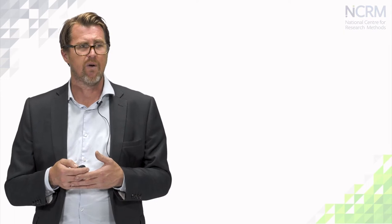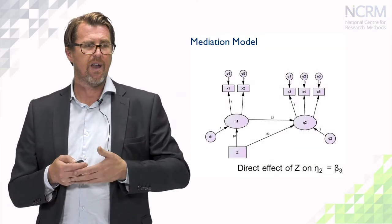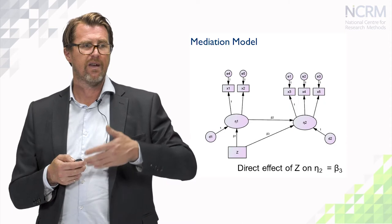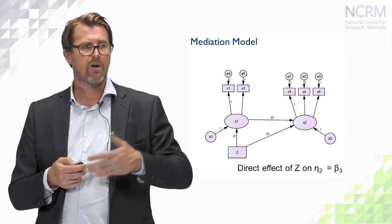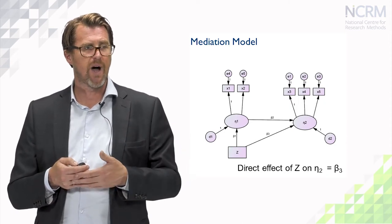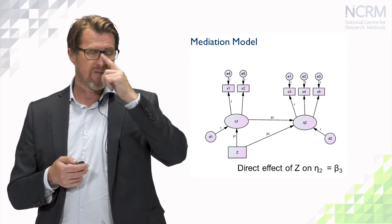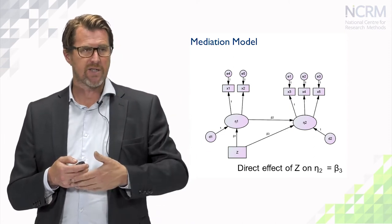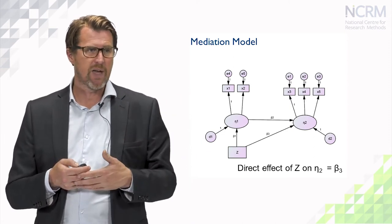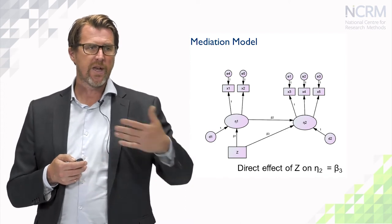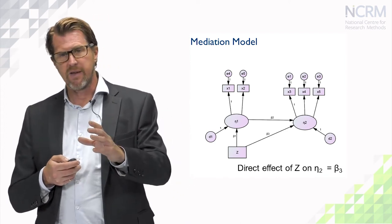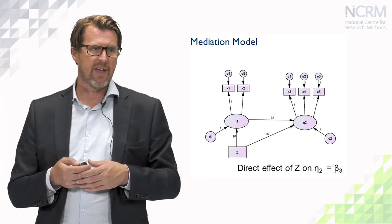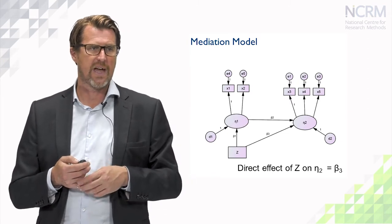We've seen a couple of examples of path diagrams with mediation already. Here we see an example where we have eta2, a latent variable, which is regressed on eta1, and we have a third variable z, which is our exogenous variable here. And we can look at the different effects that z has on eta2.